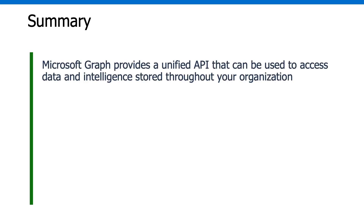To wrap up this module, let's do a quick review of some of the things we've learned about. First off, you've seen that Microsoft Graph provides a unified API that can be used to access data and intelligence stored throughout your organization. That allows you to access data in Microsoft 365, device information, and much more.